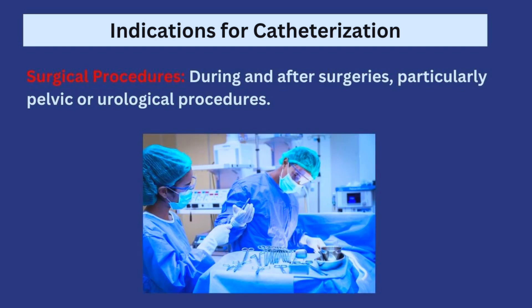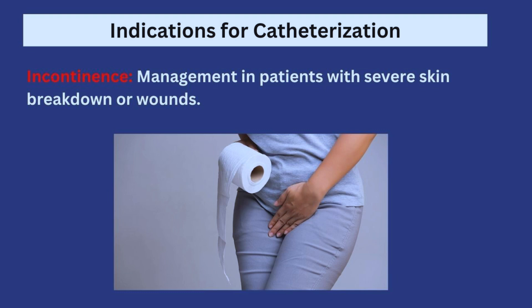Urinary catheters are also passed for patients going to surgery so that the bladder can be continuously drained during and after the procedure — especially for surgeries around the pelvic or urologic system. Patients with urinary incontinence can also be given urinary catheterization as a management measure, because when a patient cannot control how they pass urine, they continuously wet their skin, which becomes moist and may break down, causing excoriation. Passing a catheter keeps the area dry, particularly when a patient is bed-ridden and an incontinence pad may not be the best option.